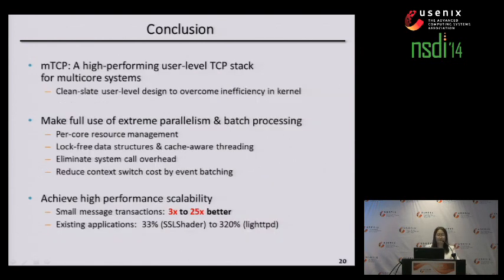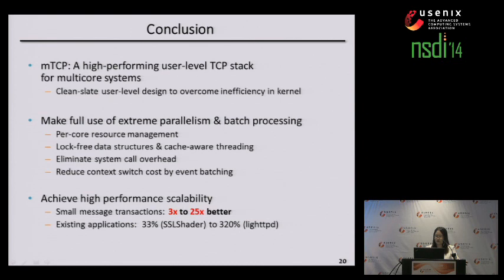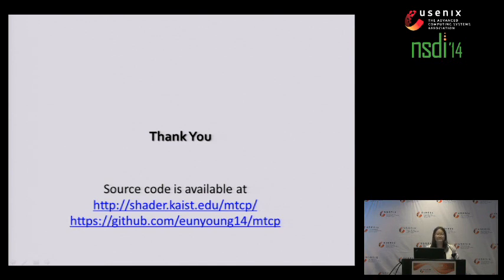In conclusion, we design and implement MTCP, a high-performance user-level TCP stack. We achieve parallelism between each core with per-core resource management. Inside each core, we optimize processing using log-structured data structures as well as cache-aware threading. MTCP eliminates system call overhead and reduces context switching costs between MTCP thread and application thread through event batching. As a result, we improve MTCP performance by a factor of 3 to 25 times. The source code is available — please freely download it, use it, and any feedback and questions are welcome.